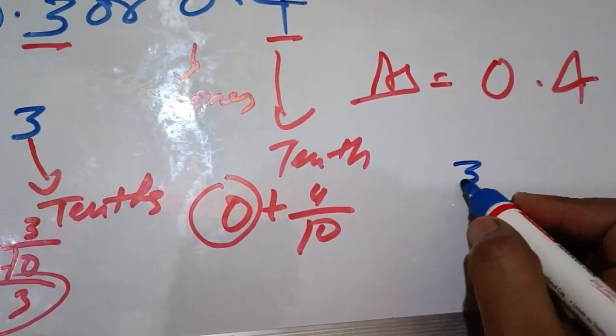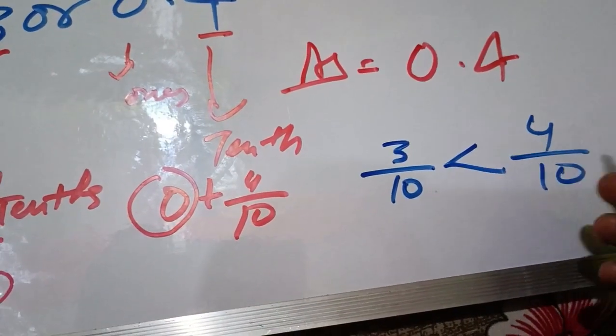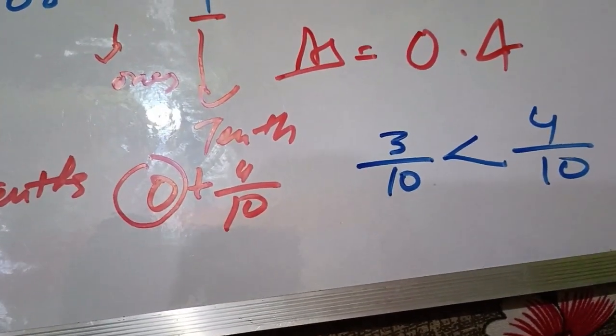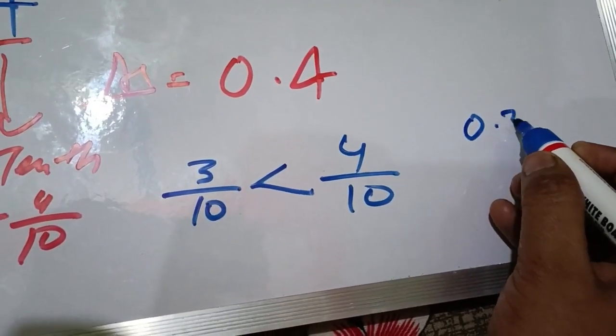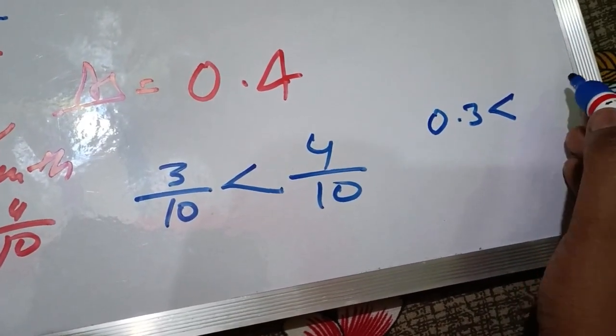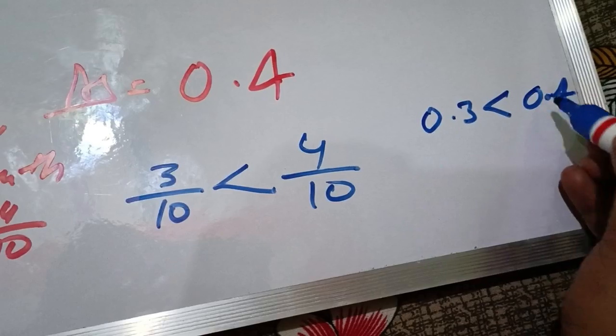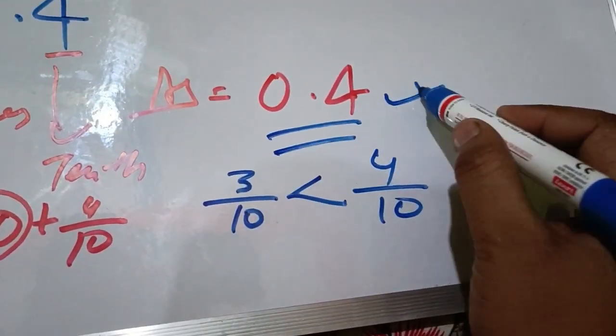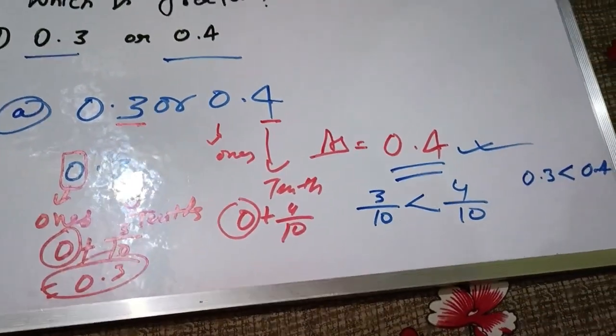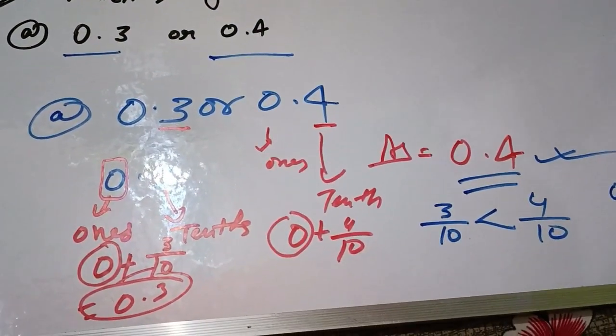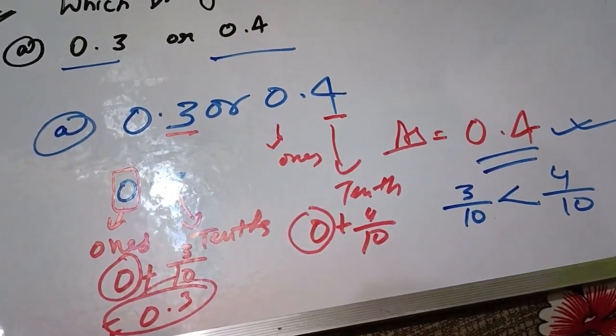3 by 10 and 4 by 10 - we can see that 3 by 10 is less than 4 by 10. So we can write 0.3 is less than 0.4. So we will see you in the next video.